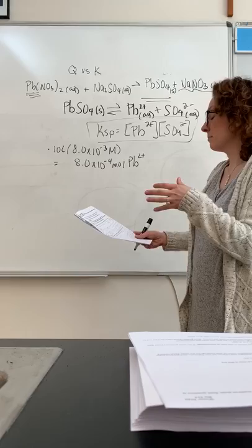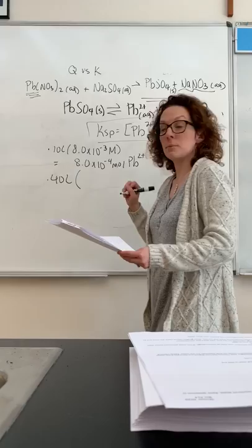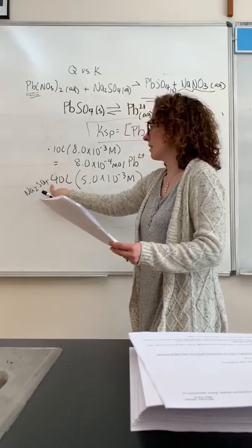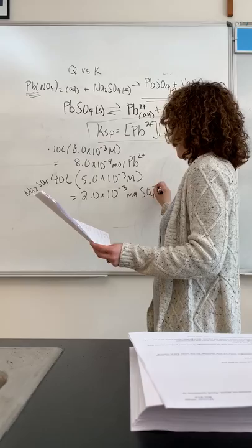I also want to look at my sulfate, which would be my other ion added. So I look at the source of the sulfate, which was the sodium sulfate. I had 0.40 liters. I multiply by the molarity, 5 times 10 to the negative 3 molar. And I just have one sulfate in Na2SO4. I don't have like SO4 2 or SO4 3, so I can leave it. I don't have to multiply by anything. And I get 2 times 10 to the negative 3 moles of SO4 2- minus.